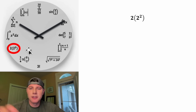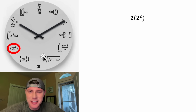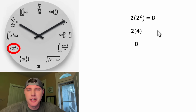Now we can go to this one: 2 times 2 squared. I'm guessing they ran out of ideas. 2 squared is equal to 4, and 2 times 4 is equal to 8. So this is equal to 8.